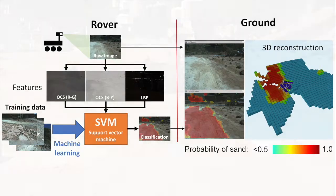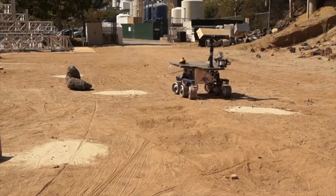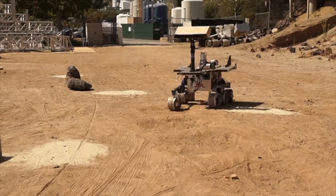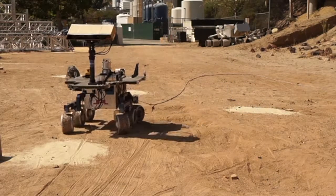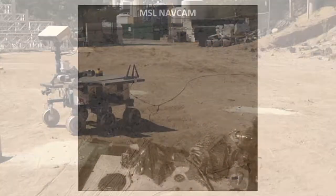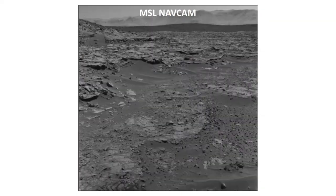Spock Light was tested in two ways. First, it is deployed on the Athena test rover and tested in the Mars Yard. Second, it is tested on the NavCam images from Curiosity.